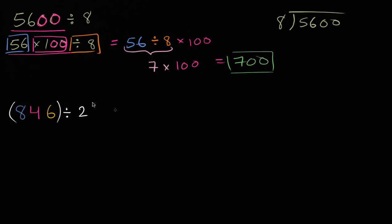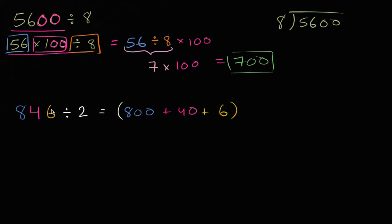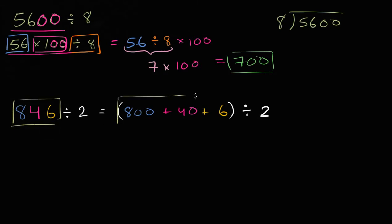846 is the same thing as 800 plus 40 plus 6. So 846 is the same thing as 800 plus 40 plus 6, and we can just divide that by 2. I just broke it up — you have 800, 4 tens which is 40, and 6 — and you can divide that by 2.